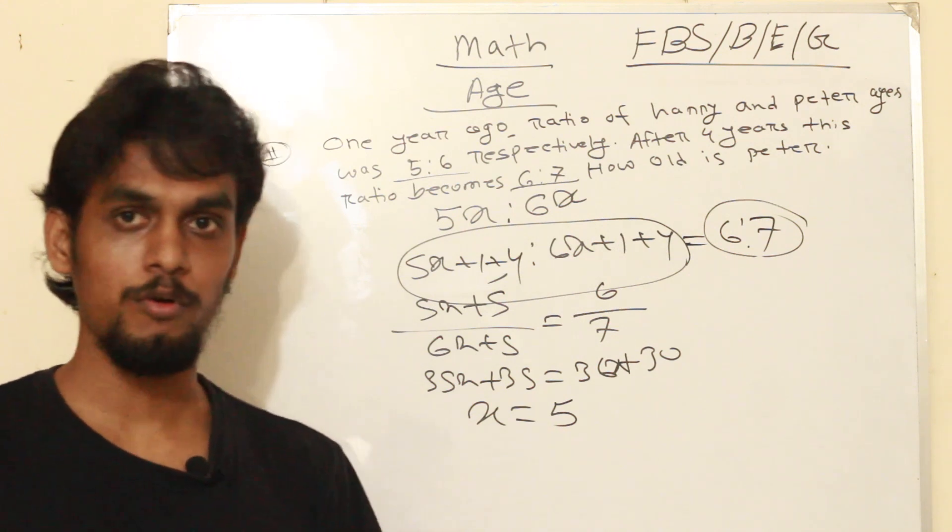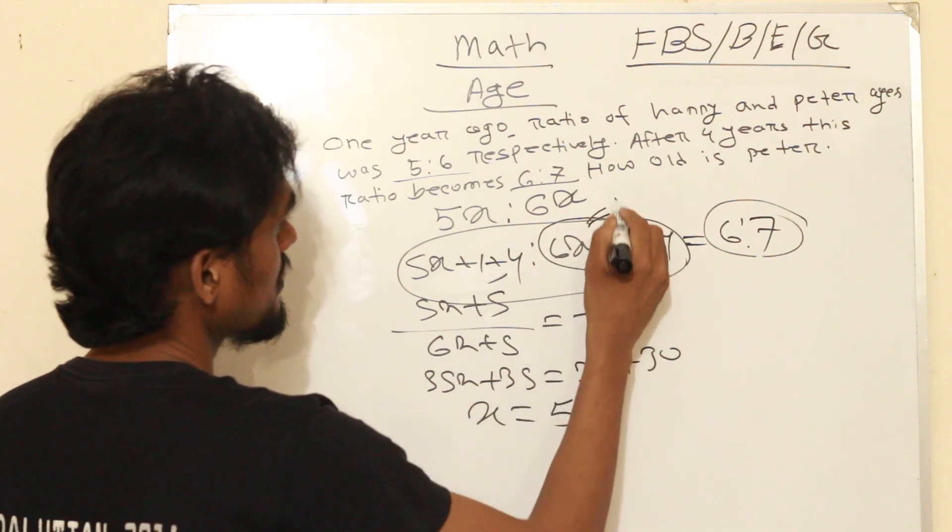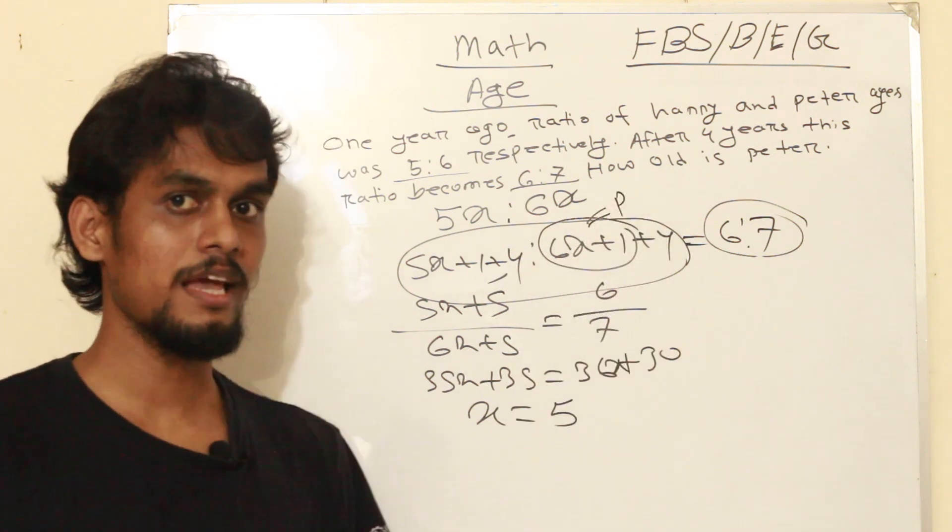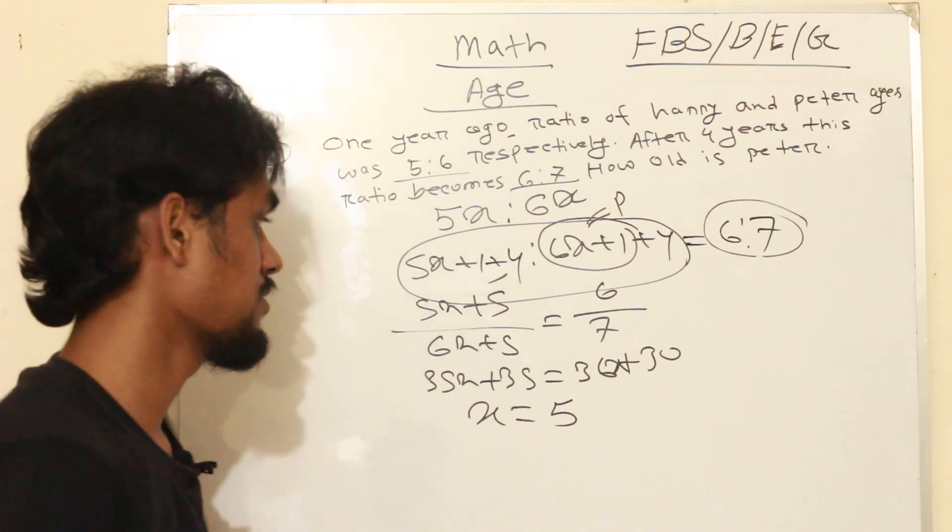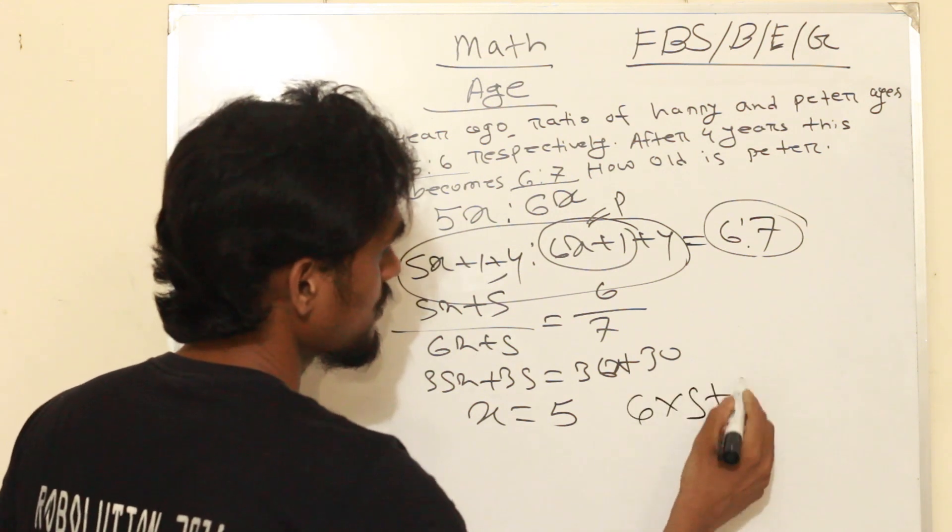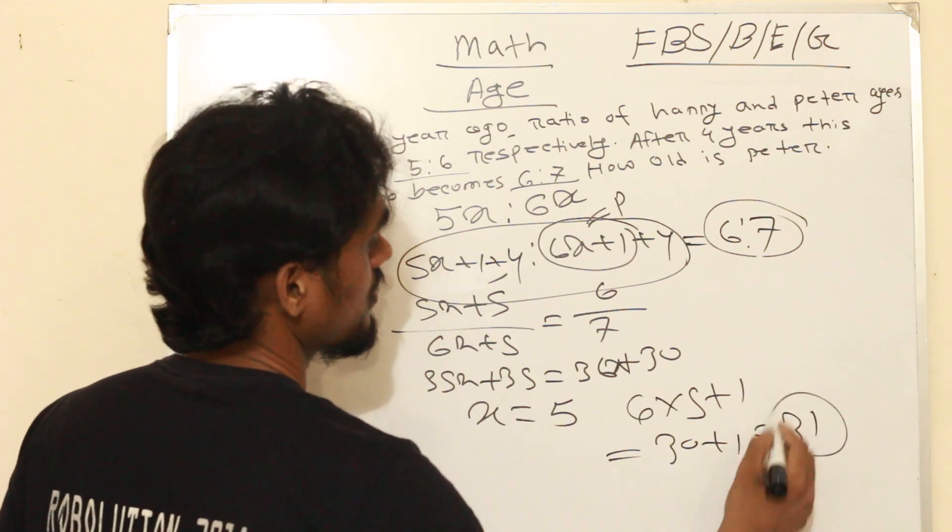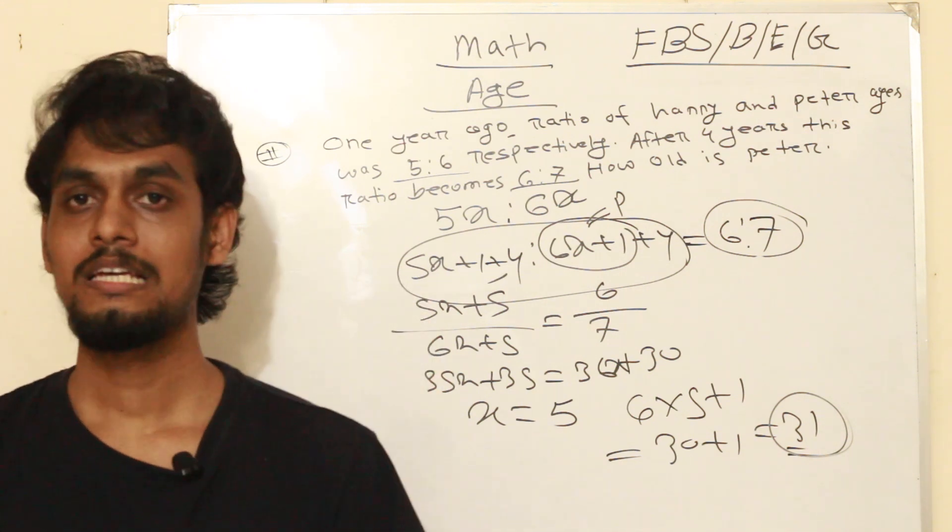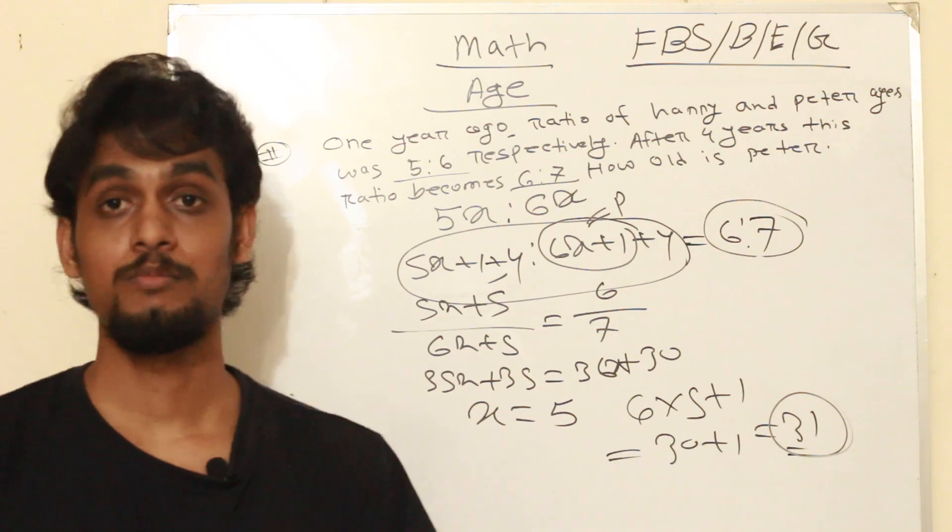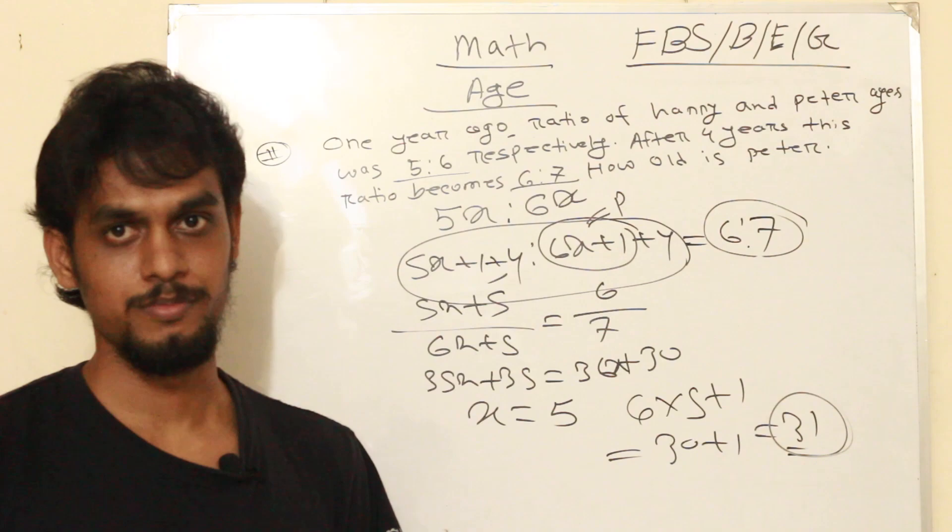So x equals 5, which means Peter's present age - since Peter's age is 6x plus 1 - that's 6 times 5 plus 1, which equals 31.